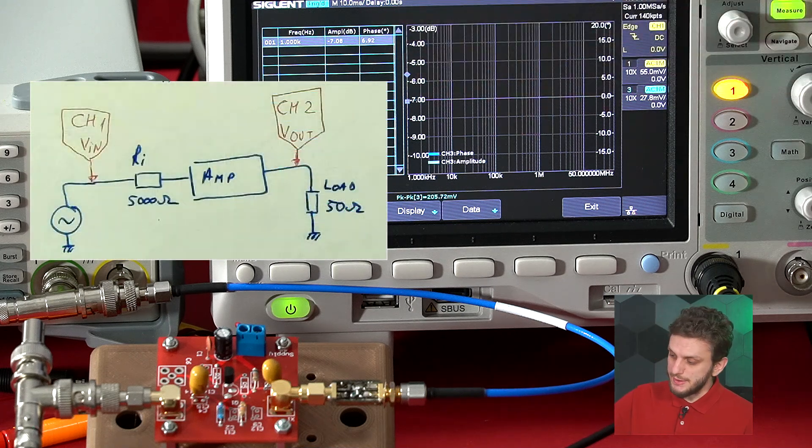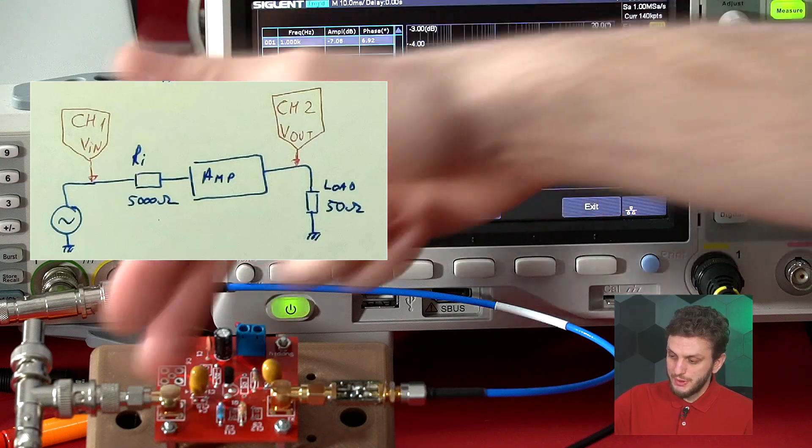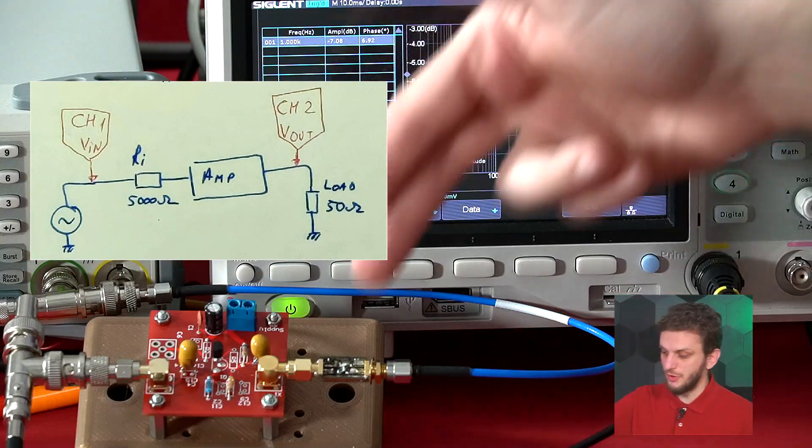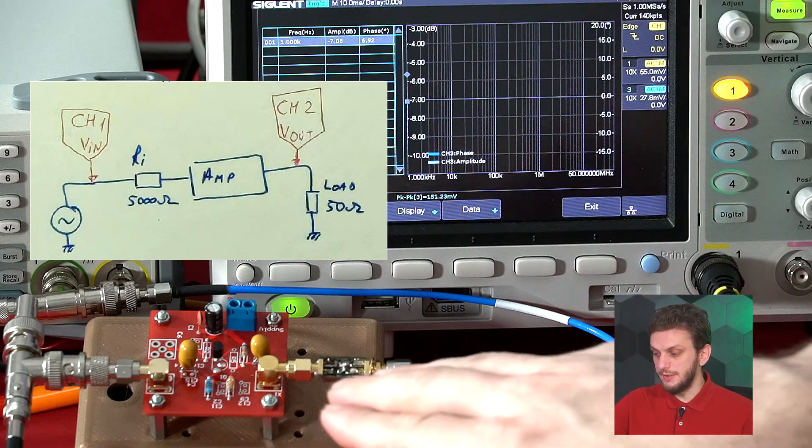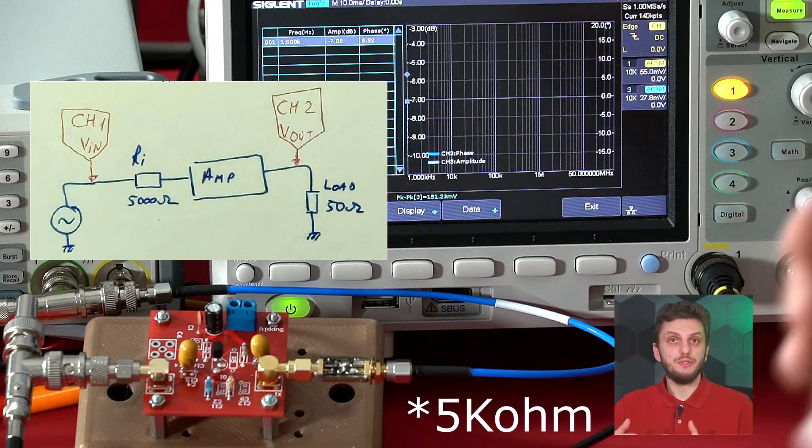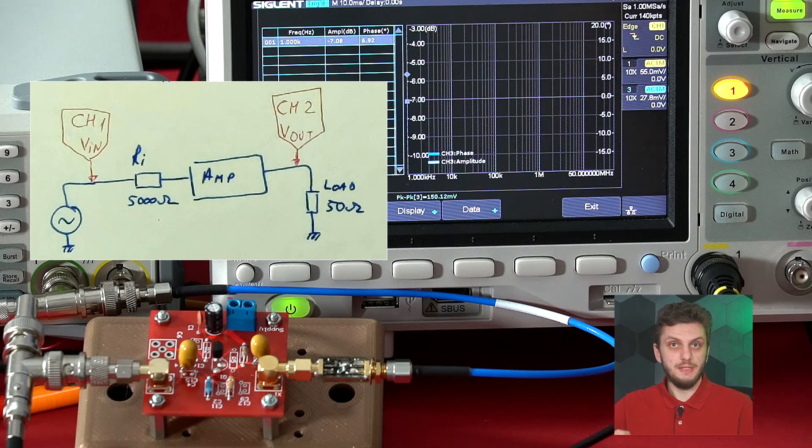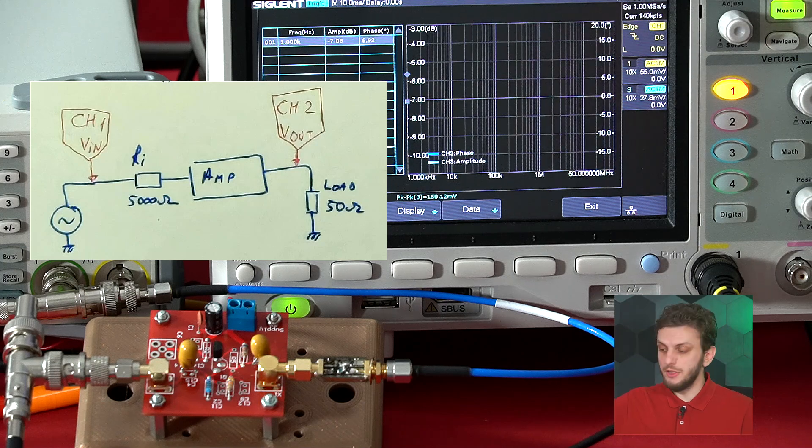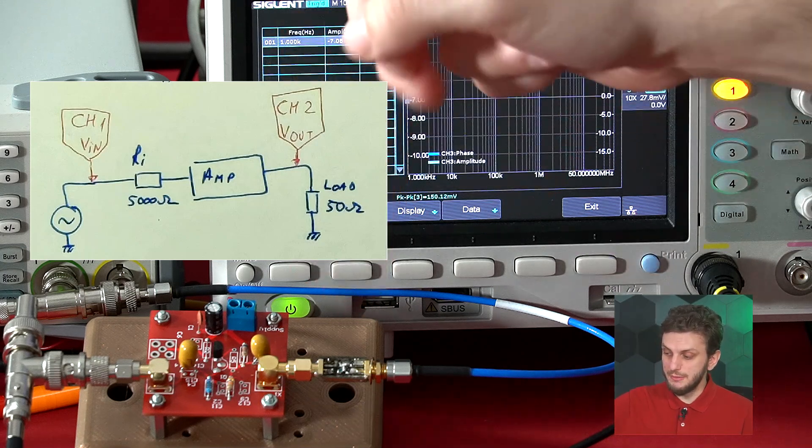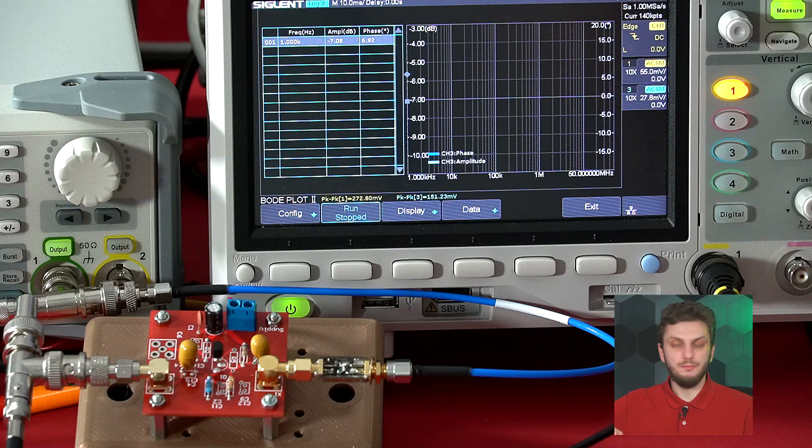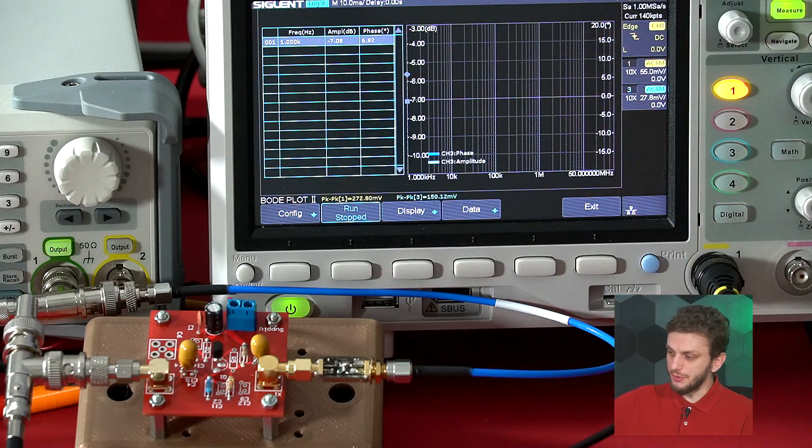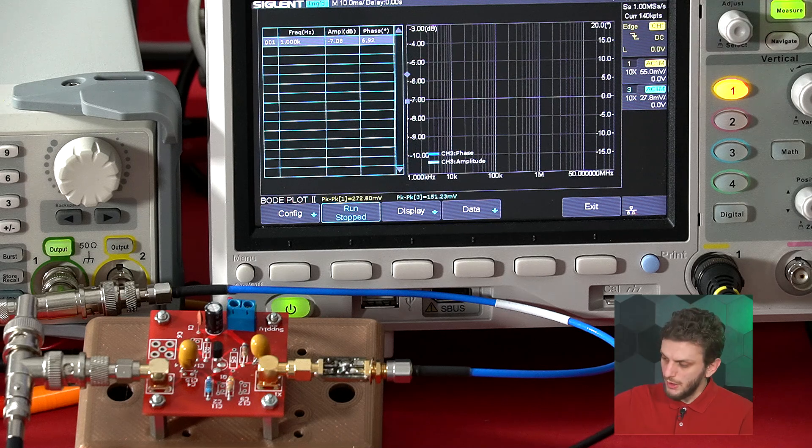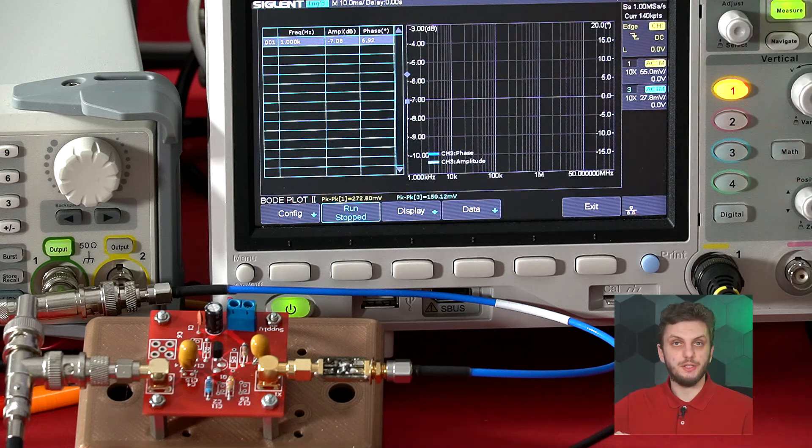To do that, I prepared this setup where the output load and measurement point is exactly the same as before. However, on the input side, I added this 4.7 kiloohm series resistance to represent a high input impedance signal source, and we can plot the amplification of the circuit by measuring before this impedance and while at the output. To perform the characterization, I will be using the Bode plot function of the oscilloscope, measuring from 1 kHz up to about 50 MHz.